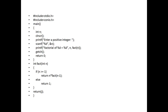Here is the code: #include stdio.h, #include conio.h. In the main function: int n, clrscr(), printf to enter a positive integer, scanf with %d and &n, then printf factorial of %d is equal to %d with n and fact(n), then getch and return 0. This is the factorial program.